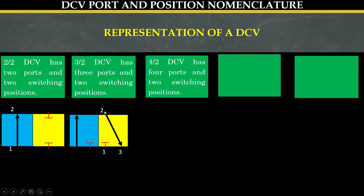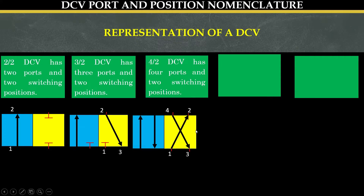A four by two direction control valve has four ports and two switching positions. Port number one is allowing the fluid to flow to port number two, and port number four is allowing the fluid to flow to port number three.